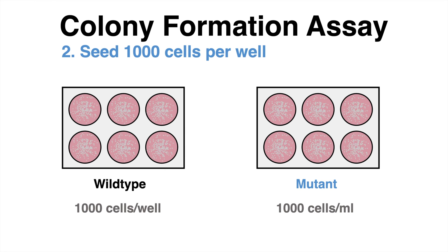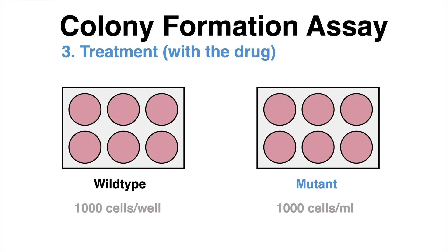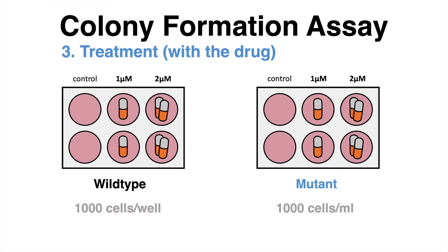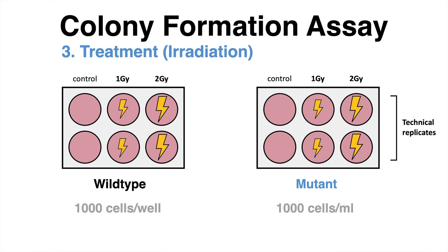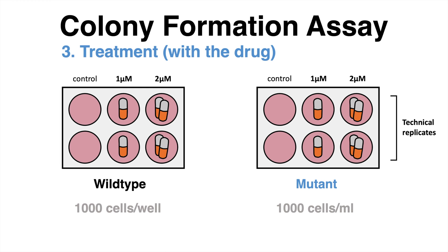The cells are given time to attach to the plate overnight. The following day, the cells can be treated with increasing concentrations of a drug of interest. As a control, two wells are left untreated. Each condition is prepared twice to have technical duplicates. The same could be done with irradiation instead of using a compound.